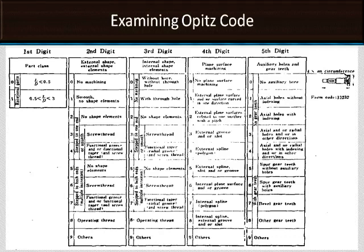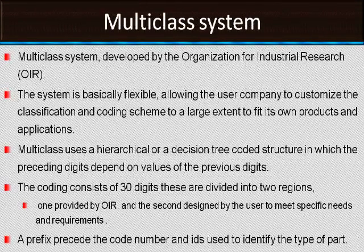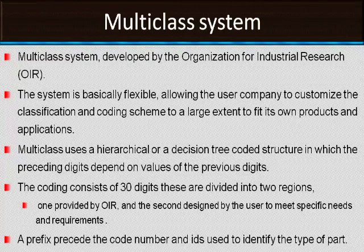The Multi-Class system was developed by OIR, Organization for Industrial Research. The system is basically flexible, allowing the user company to customize the classification and coding scheme to a large extent to fit its own products and applications. Multi-Class uses a hierarchical or decision tree code structure in which preceding digits depend on the value of previous digits. The coding consists of 30 digits divided into two regions: one provided by OIR, and the secondary designed by the user to meet specific needs.